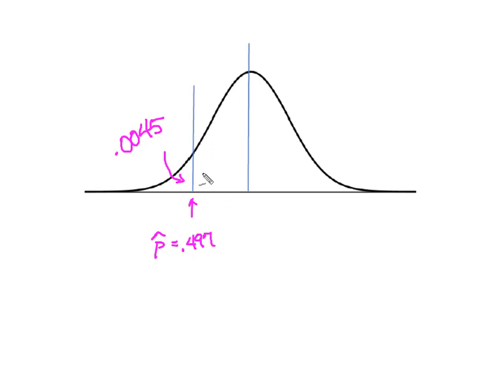But if I wanted the probability of more than my 0.497, I could take that 0.0045 and subtract it from one, because I know that this side of the curve has 50% and this side has 50%.